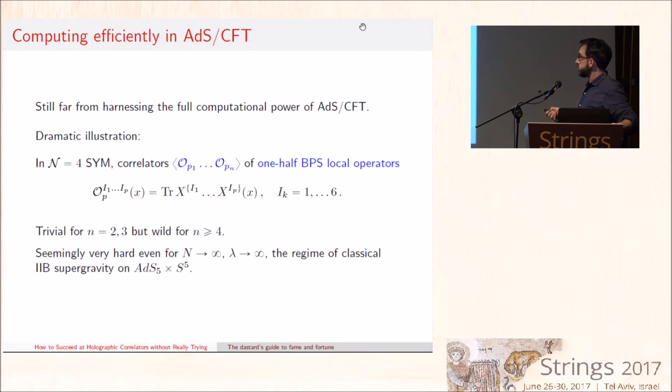These correlation functions are protected for two-point and three-point functions, but they receive quantum corrections for n≥4. They are extremely complicated objects. It's natural that these would be complicated for finite n and finite λ. For large n and finite λ, integrability should come to their rescue. But really, what is the excuse for not being able to compute these objects even in the extreme regime of large n and large λ, where we are told this should just be computed by tree-level supergravity on AdS5×S5?